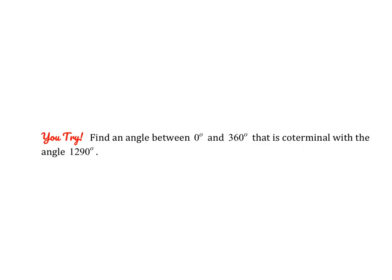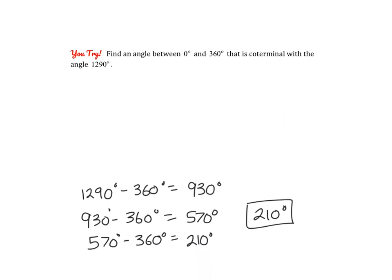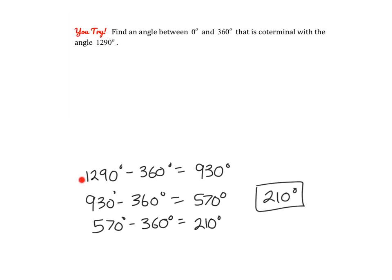Go ahead and pause the video and find an angle between 0 and 360 degrees that is coterminal with 1,290 degrees. Starting at 1,290 and subtracting one full revolution gives 930 — not between 0 and 360. Subtract another to get 570 — still not small enough. Subtract another full revolution to finally land on 210 degrees, which is between 0 and 360. All four of these angles are coterminal.